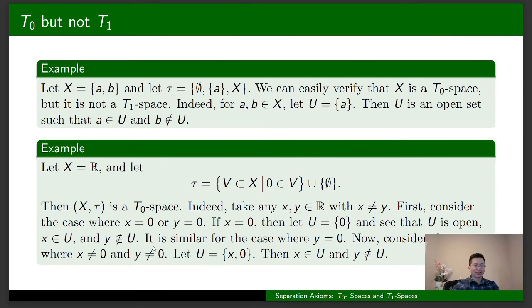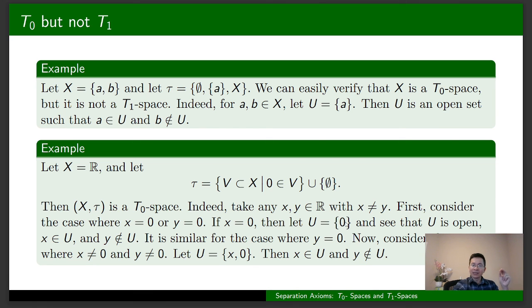Now let's revisit the previous example. In this example, the space is not a T1 space because we can find a single-point set that is not closed. Take the set {0}: its complement doesn't contain 0, so the complement is not open. Therefore, {0} is not closed, and it is a single-point set. So this is not a T1 space.